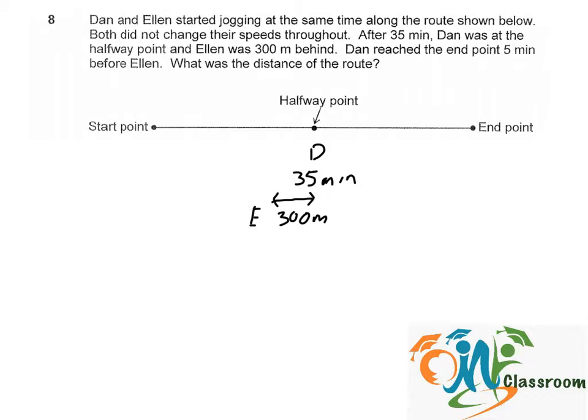So when Dan is at the end point, he would have took double the time, which is 35 minutes times 2 equals to 70 minutes. And Alan will be 2 times 300 meters away from him.